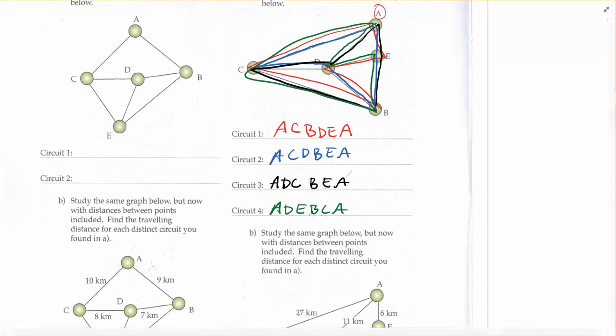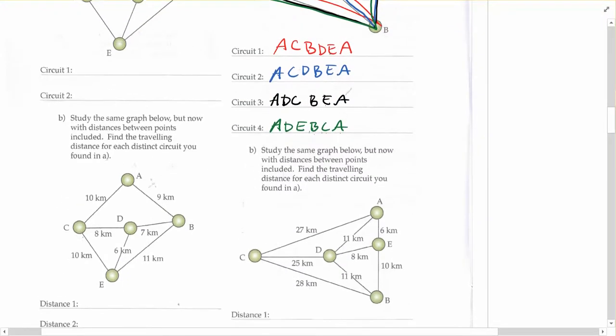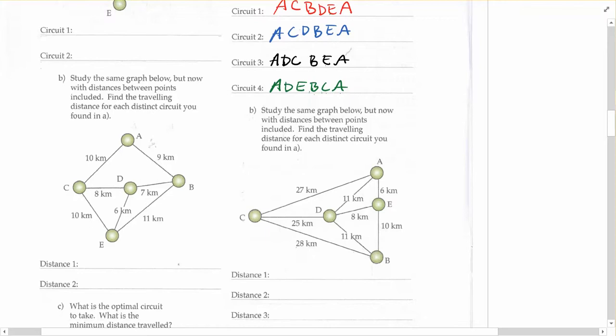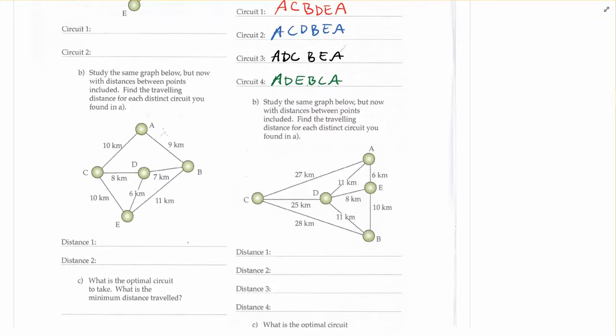And once you've got those figured out, you're going to want to add them up for yourself. So again, looking at these diagrams, and using those distances. So for the first circuit that we did, A, C, D, E, B, A. I'm just going to pause this so you don't have to go through this misery, but we're looking for writing down what all these are. So we'll just write them down and show them added up.